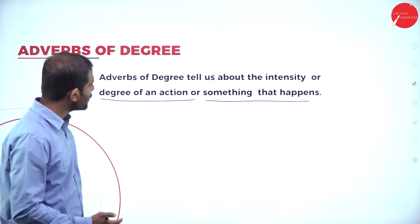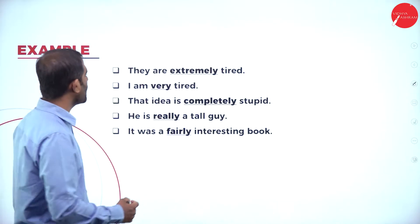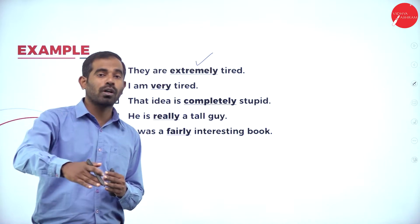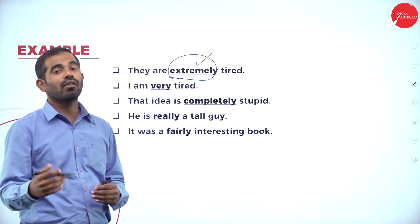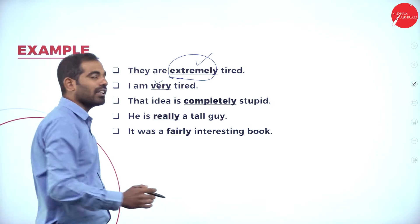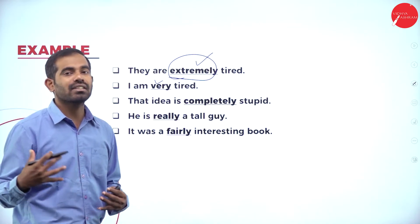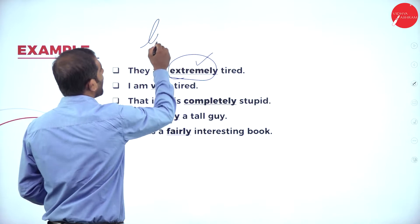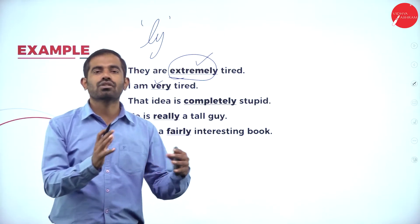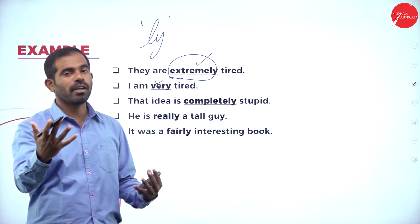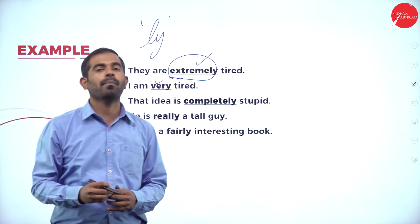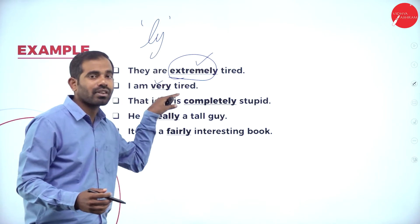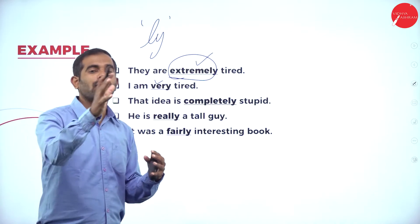Here are some examples of adverbs of degree. 'They are extremely tired' — extremely shows the level of intensity. 'I am very tired' is different from 'I am tired.' A useful tip to identify adverbs: they usually end with -ly. However, remember it is not always the case — words like 'very' don't end in -ly. It depends on the context and the type of adverb.